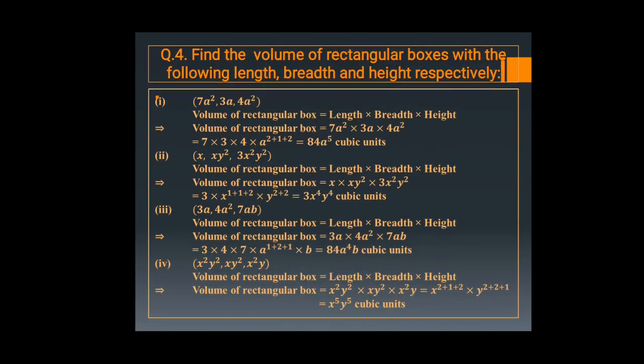In question number 4, you need to find out the volume of a rectangular box. When there is one more side added — the height — that is a three-dimensional shape. Volume of a cuboid is length into breadth into height. Here: 7a square multiplied by 3a multiplied by 4a square. Coefficient: 7 into 3 into 4 is 84, and a's power is 2 plus 1 plus 2 equals 5. So volume is 84 a raise to the power 5 cubic units.